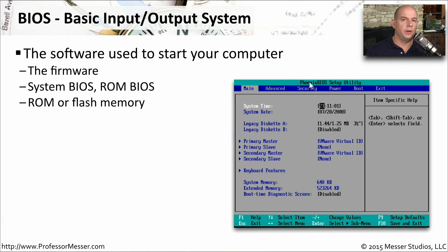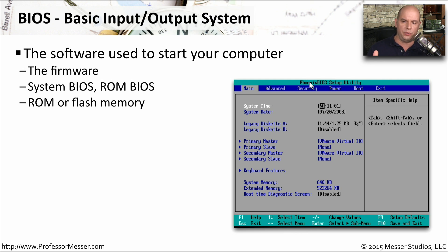When you first start up your computer, before it loads an operating system or does anything relating to Windows, Linux, or Mac OS, it first runs some software called the Basic Input Output System. This is the starting point for everything else that runs on your computer. Even if there were no storage devices and no operating systems at all, you would still be able to run the Basic Input Output System. You may hear this referred to as the firmware, the system BIOS, or the ROM BIOS — all names used to describe this Basic Input Output System.